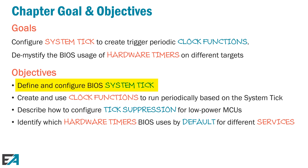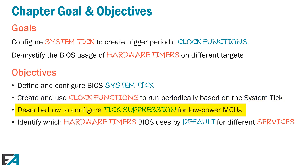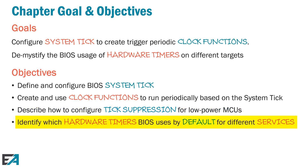The objectives are really: define the system tick, what is a clock function, how do you create a clock function, and what are clock functions used for? If you've got a low power device, you've probably heard an expression called tick suppression, so we need to define what that is and how to configure it. And then Scott and I put together a table of timers and architectures to talk about which ones are used by default for which services within BIOS, whether you can combine them, and any exceptions.